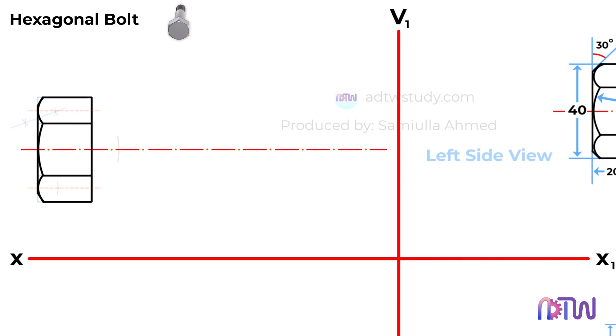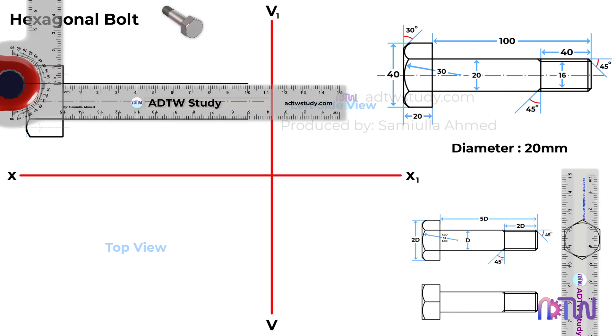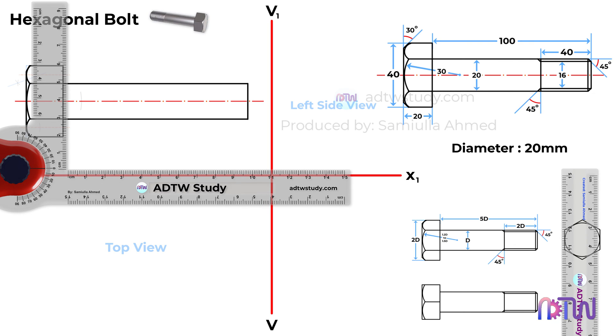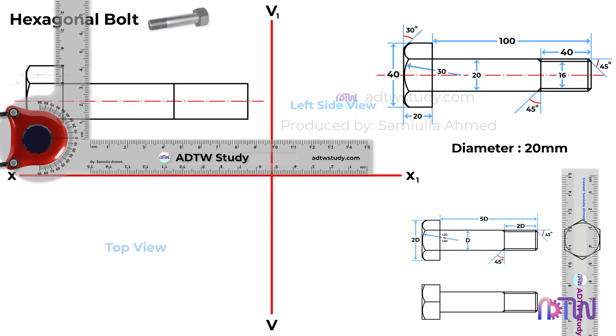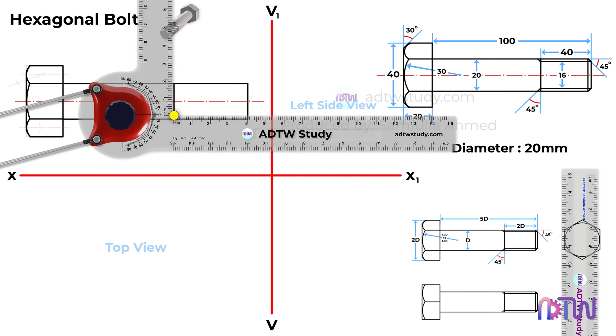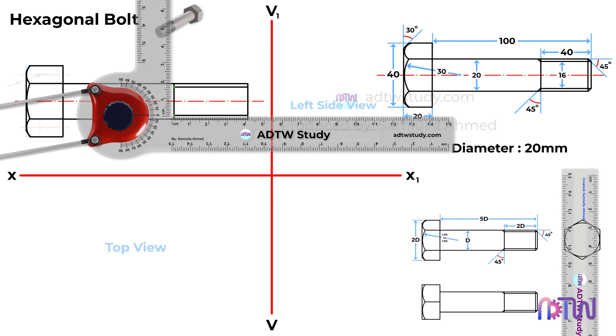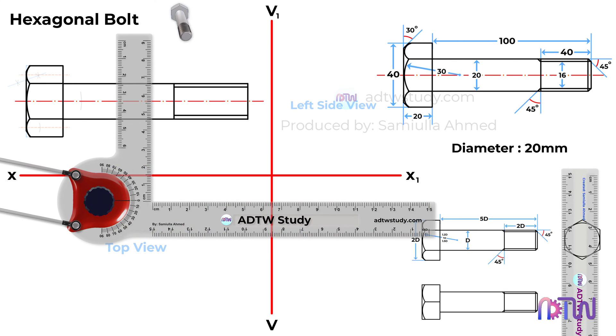Extend the body of the bolt to 100mm using the drafter. Mark the threaded portion 40mm from the end of the body. To represent the threaded portion, considering its width is 16mm, place the drafter at the centerline and mark points at 8mm gaps on both sides. Extend these points with horizontal lines to depict the threaded portion. Lastly, draw 45 degree chamfers at the run-out and end of the body to finalize the front view of the bolt.